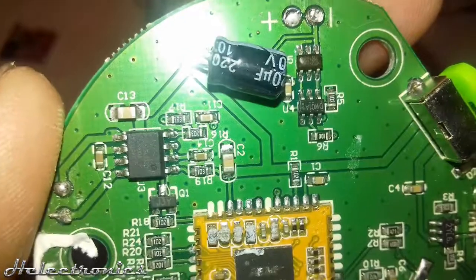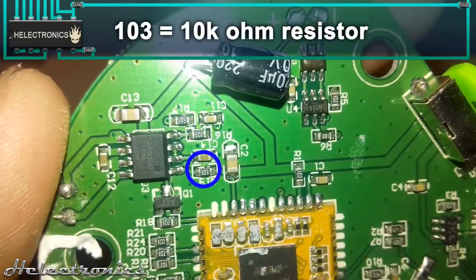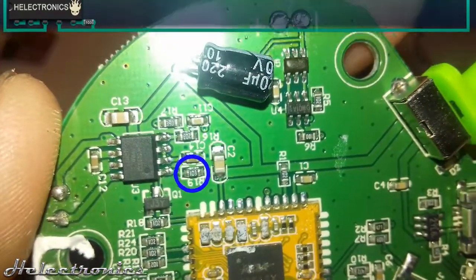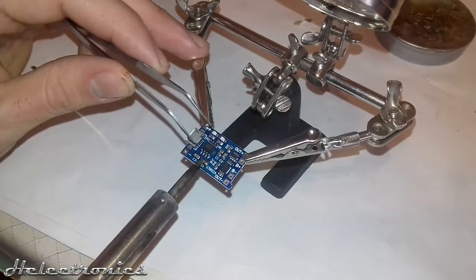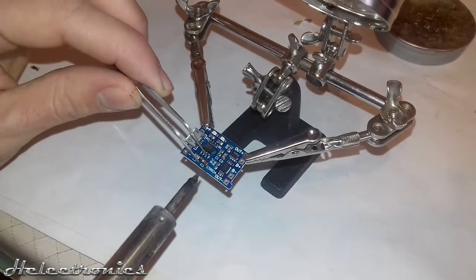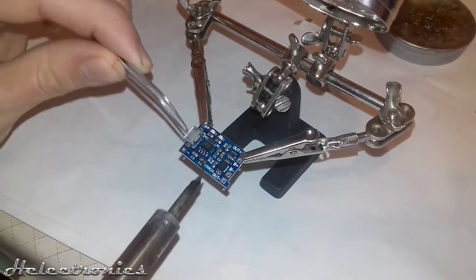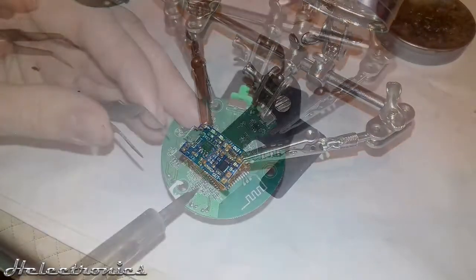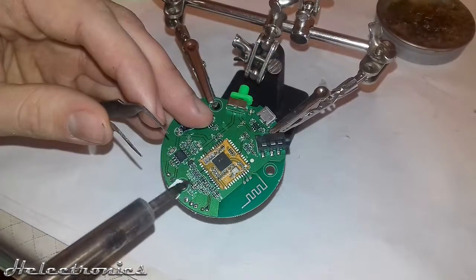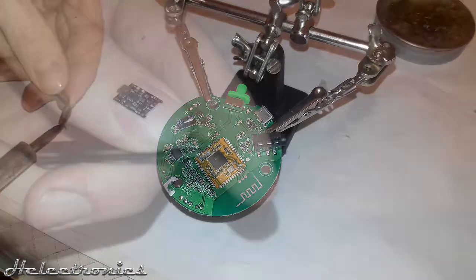Luckily I found several 10k ohm SMD resistors on the original board so I could use one from there. First I desoldered the 1200 ohm resistor from the charging protection board. Then I desoldered the 10k ohm resistor from the original board and checked it with the multimeter.